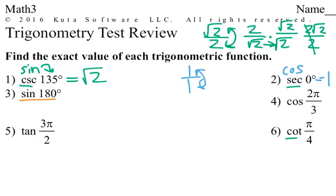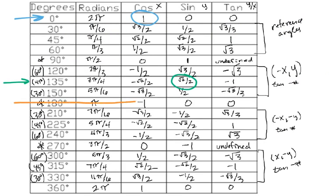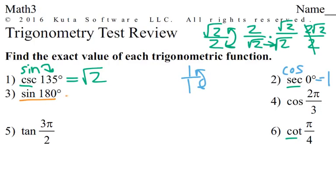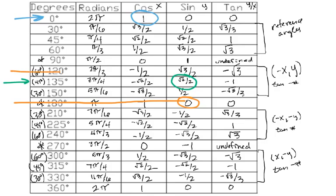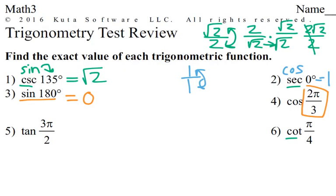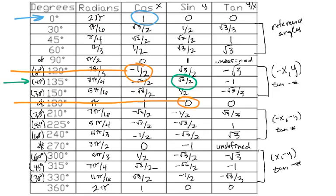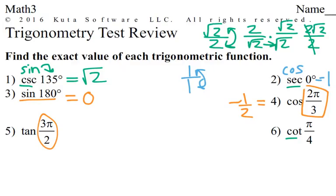Sine of 180 — that one's easy. We just go to 180, find the sine, and it's 0. With radians, same idea. Cosine of 2π/3 is negative 1/2. Tangent of 3π/2 is undefined, because tangent is y over x — sine over cosine — and the cosine there is 0 on the bottom. Can't do that, so it's undefined.